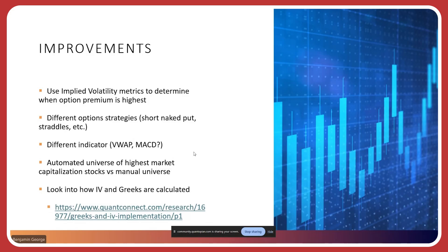What are some ways we can improve this strategy? One way is to use implied volatility metrics to determine when the option premium is highest — when you're selling an option, you want implied volatility to be high because the option you're selling will be worth more. We could look at different option strategies like a short naked put or straddle. We could use different indicators — instead of simple moving average, use volume weighted average or MACD. We could also automate our universe selection, looking at a particular sector rather than the highest market caps.